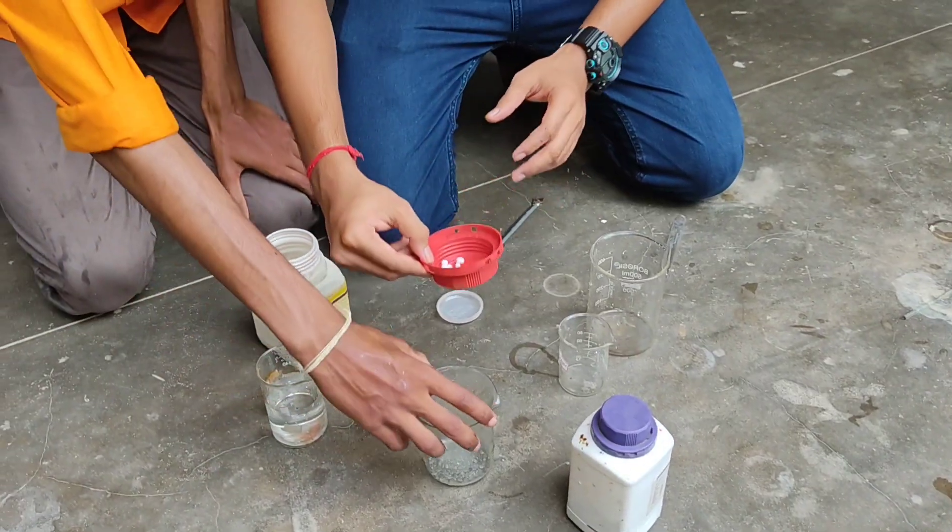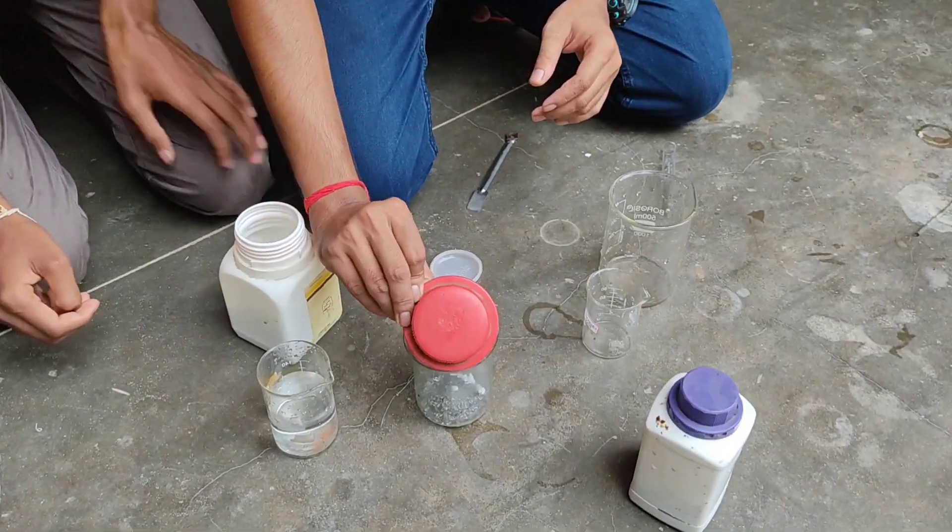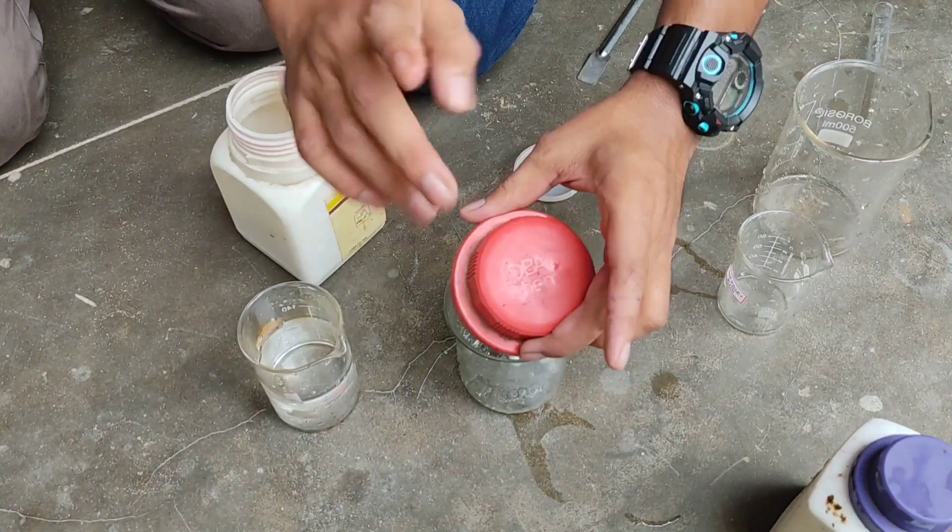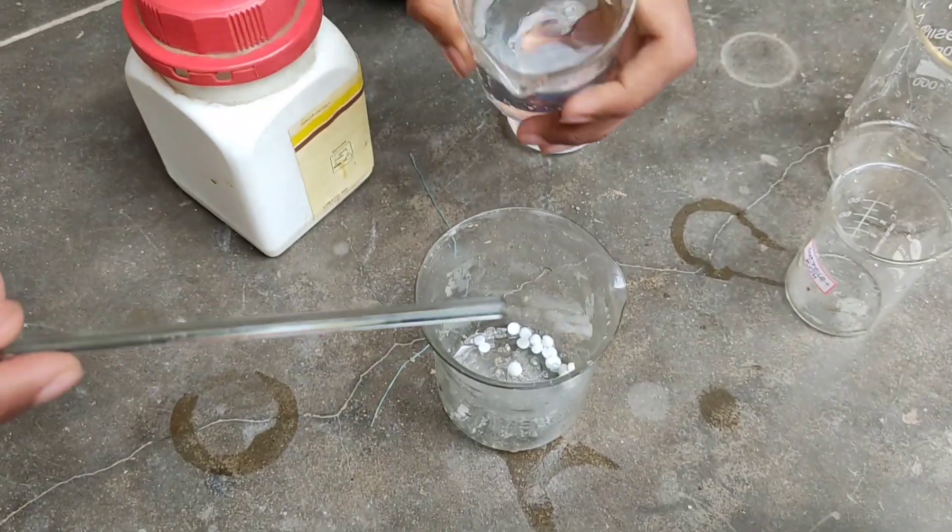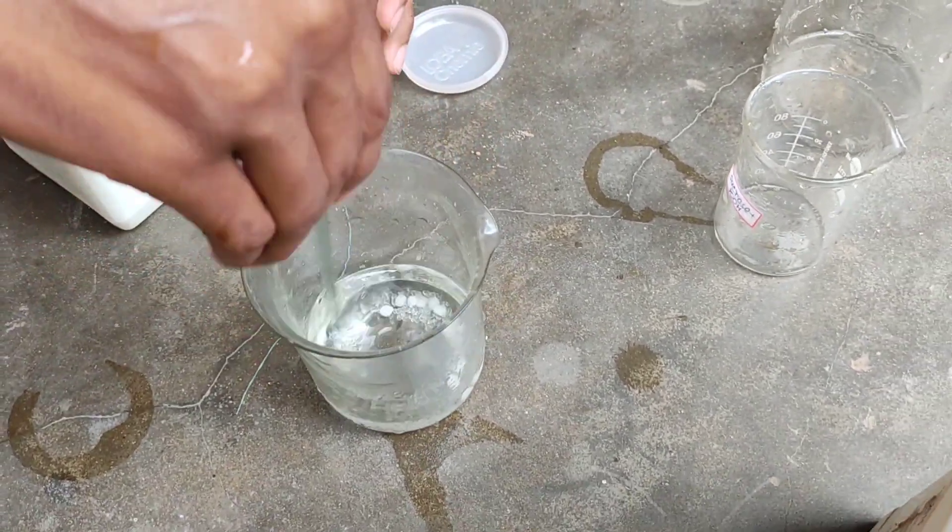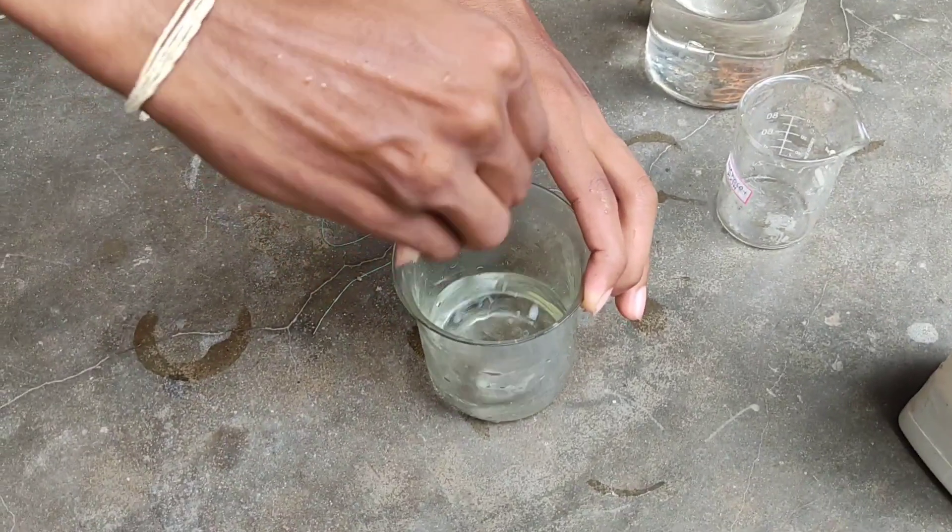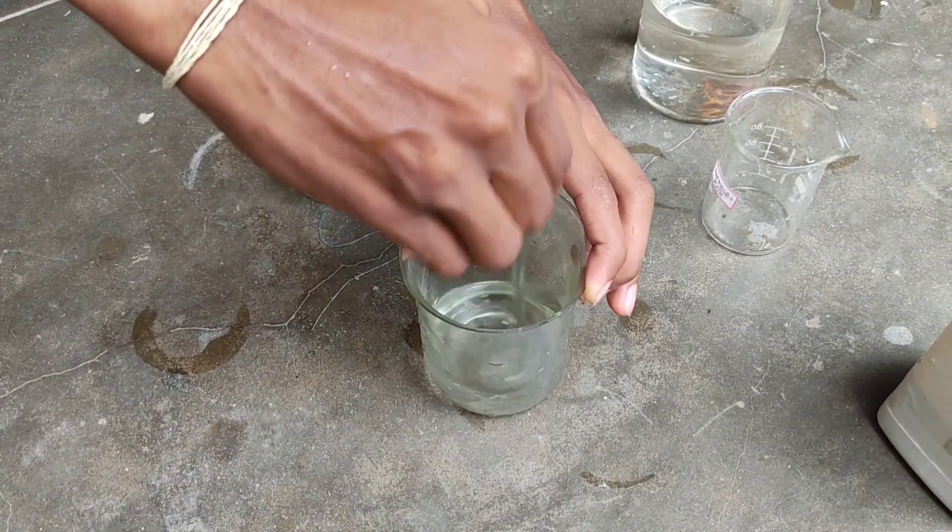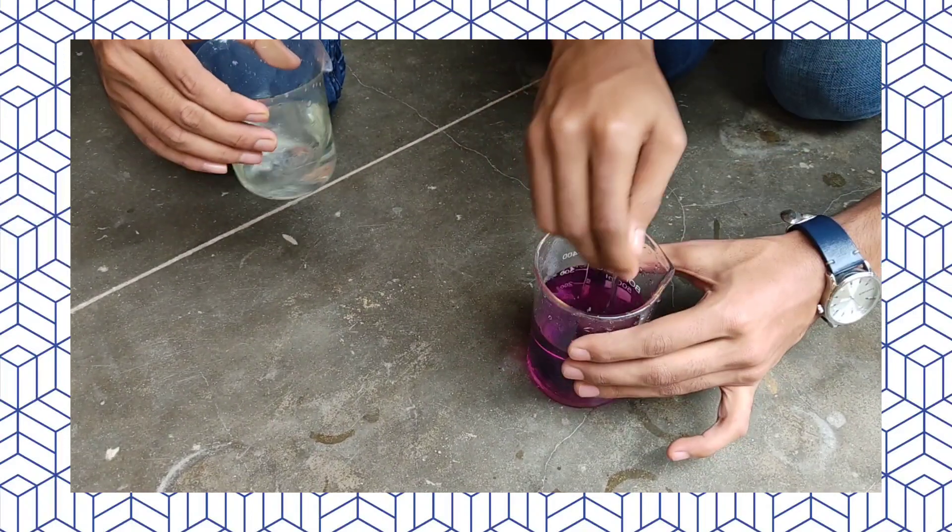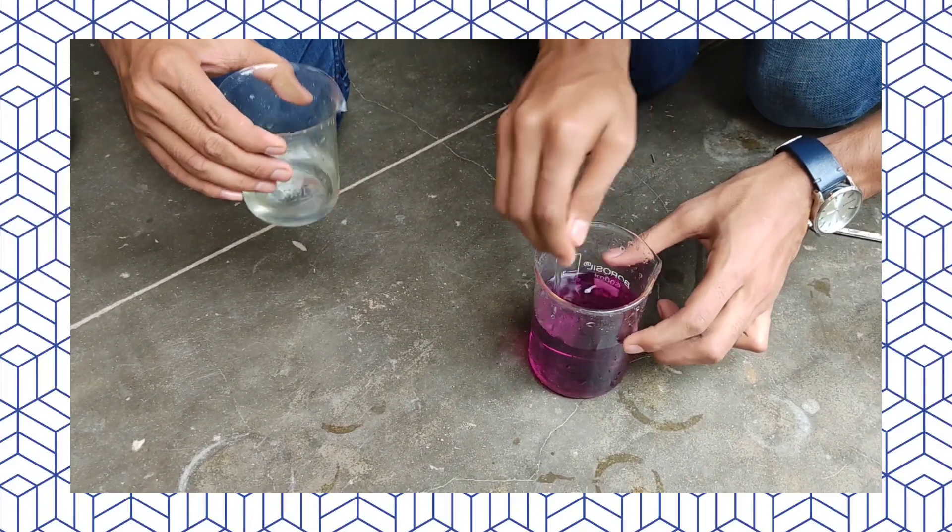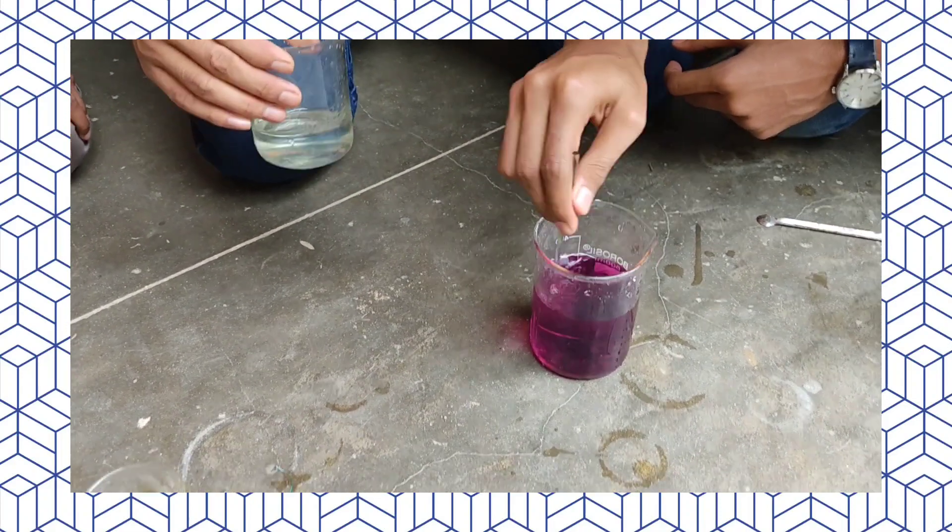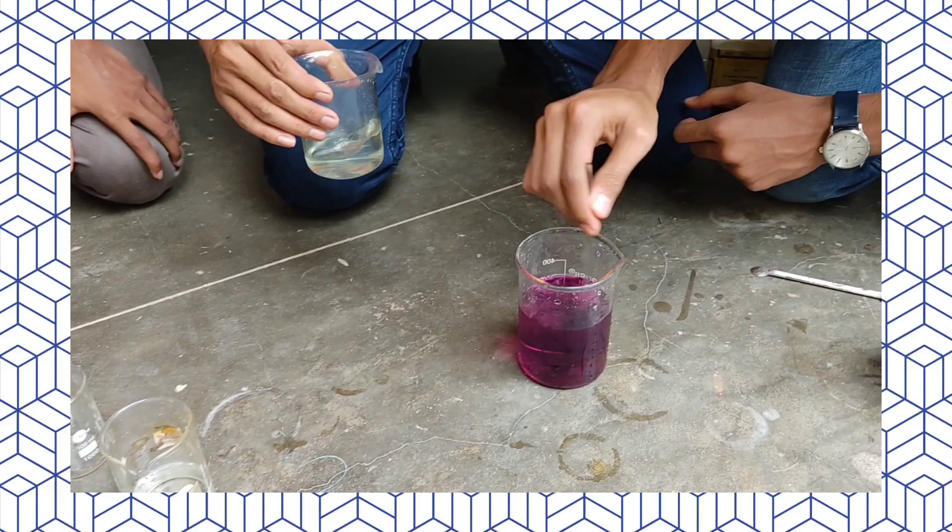In this amazing experiment, we are first adding potassium hydroxide to cane sugar and water to make a clear solution. This reaction is called chemical chameleon as it changes its color.